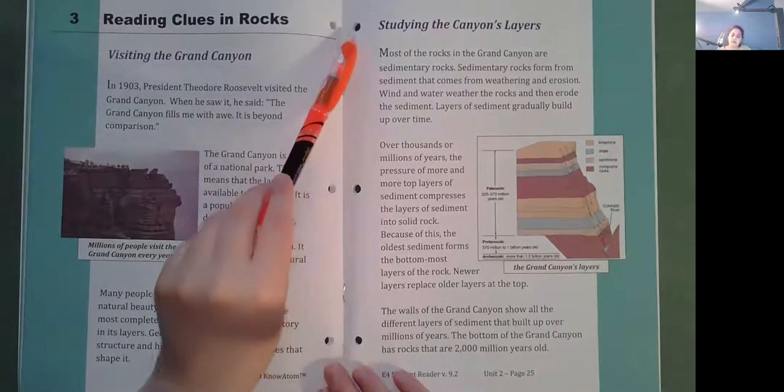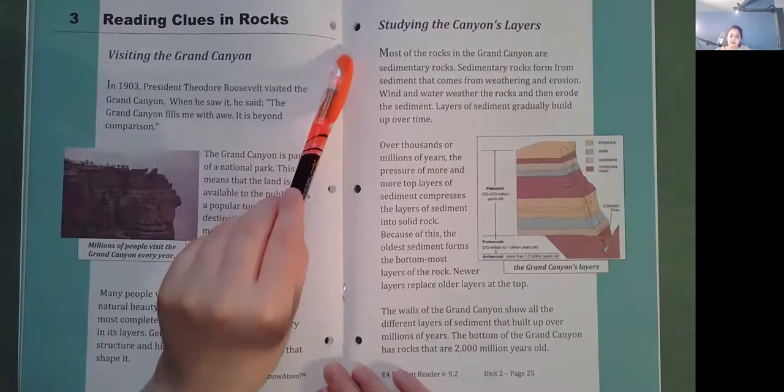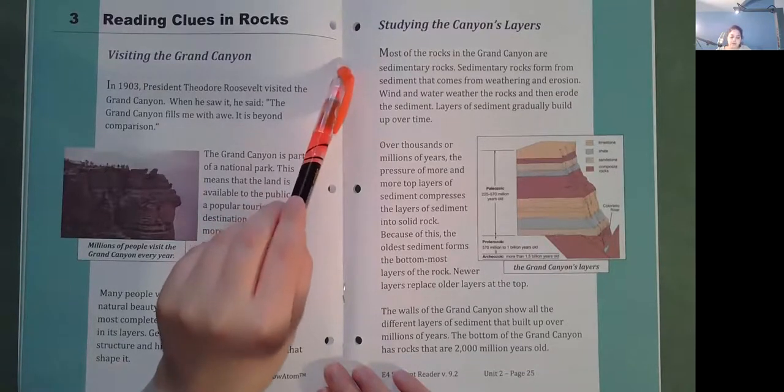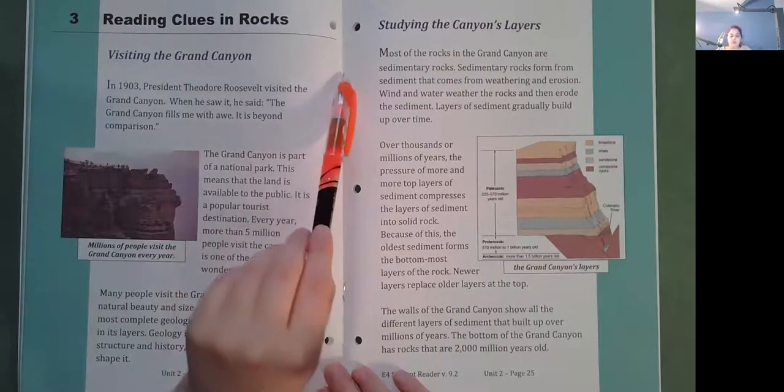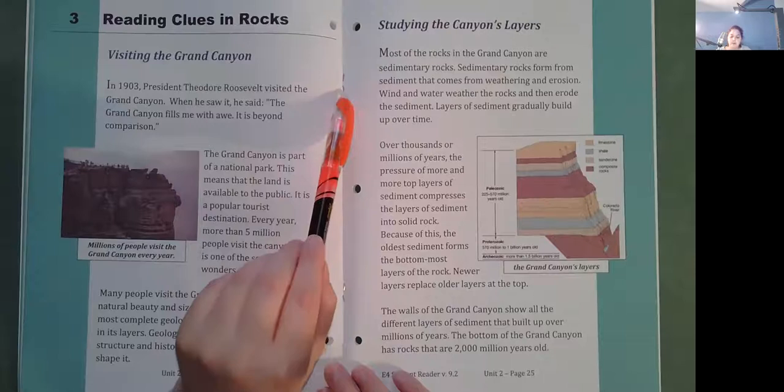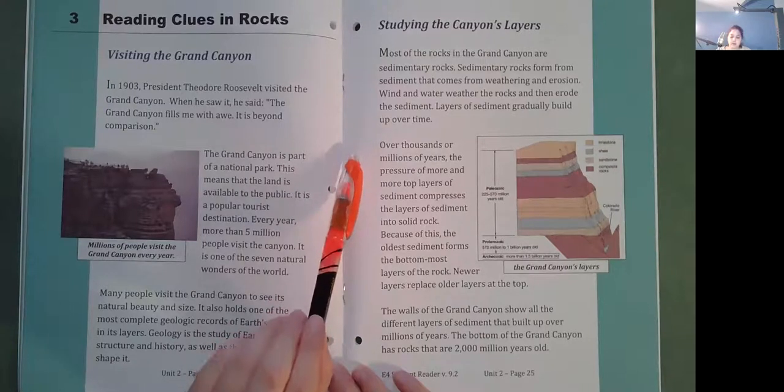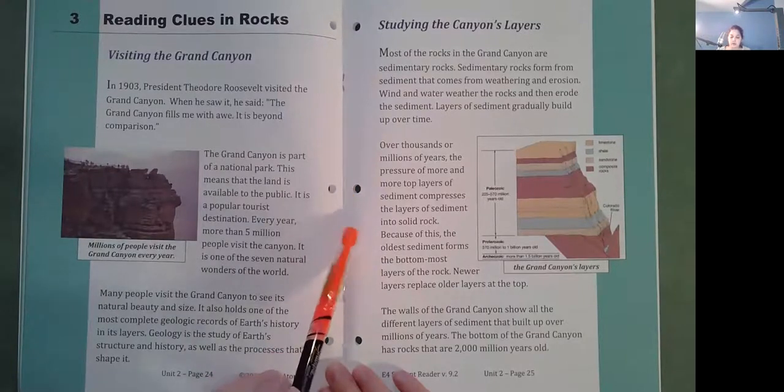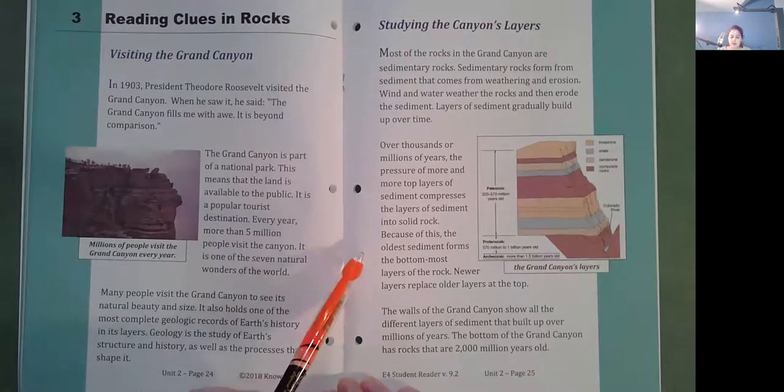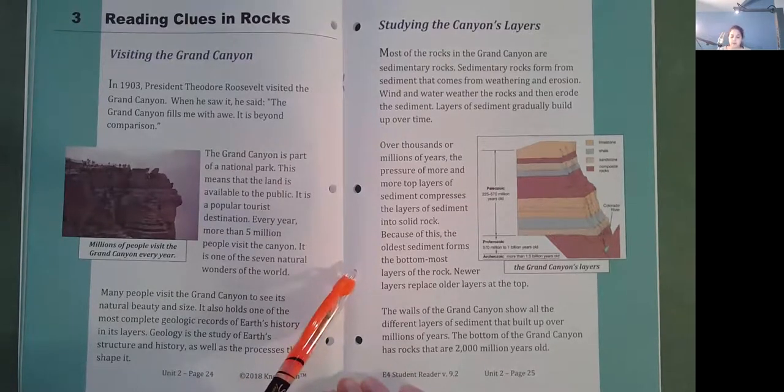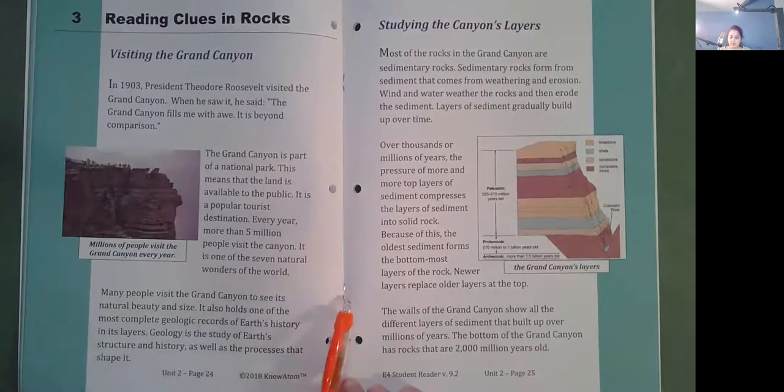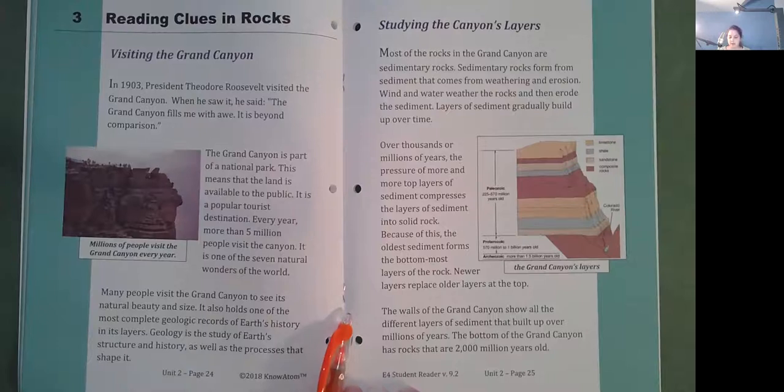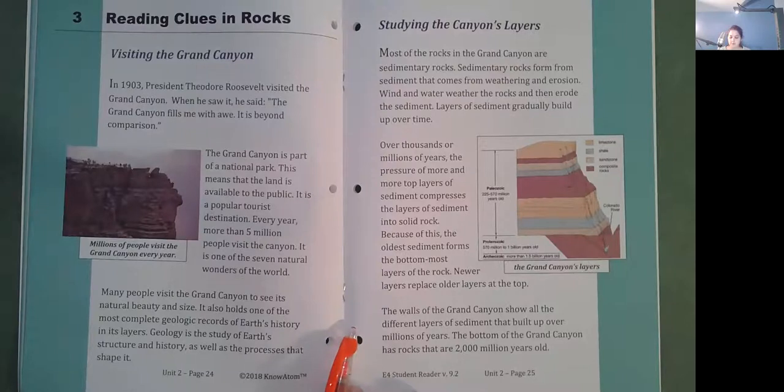Studying the canyon's layers. Most of the rocks in the Grand Canyon are sedimentary rocks. Sedimentary rocks form from sediment that comes from weathering and erosion. Wind and water weather the rocks and then erode the sediment. Layers of sediment gradually build up over time. Over thousands or millions of years, the pressure of more and more top layers of sediment compresses the layers of sediment into solid rock. Because of this, the oldest sediment forms the bottom-most layers of the rock. Newer layers replace older layers at the top. The walls of the Grand Canyon show all the different layers of sediment that built up over millions of years. The bottom of the Grand Canyon has rocks that are 2,000 million years old.